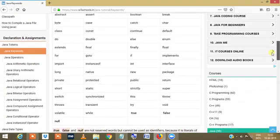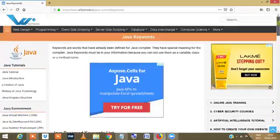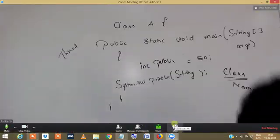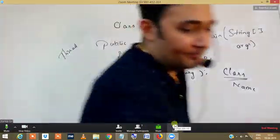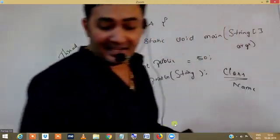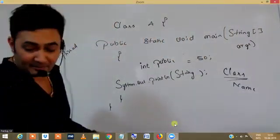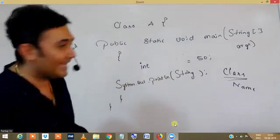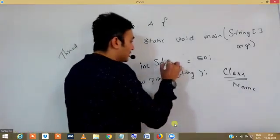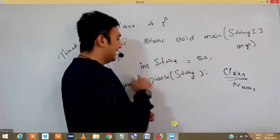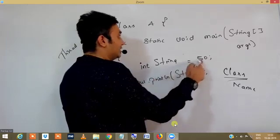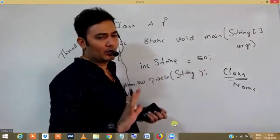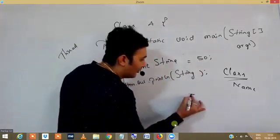String in Java is a class name, and in Java, class names can be used to store a value in it. Like this, int string equals 50. This will work 100%. Output of this will be 50.